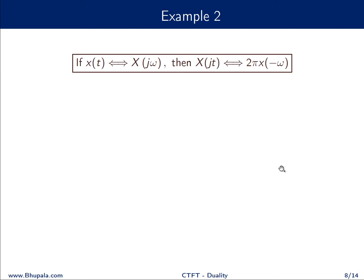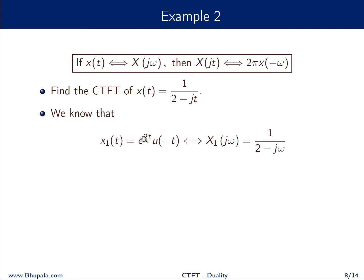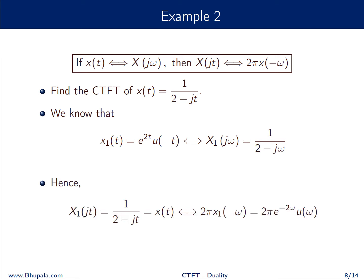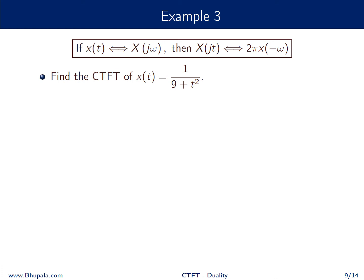Example 2: find the Fourier transform of x(t) = 1/(2−jt). We invoke the same trick: e^(2t)u(−t) has Fourier transform 1/(2−jω). Calling this x₁(t) with transform X₁(jω), by the duality property, X₁(jt) = 1/(2−jt) is our x(t), and its Fourier transform is 2π times X₁(−ω), which gives the corresponding expression.